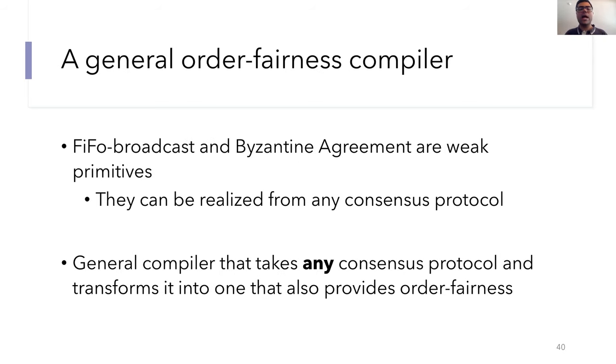A very cool byproduct of our protocol is that it serves as a fair ordering compiler. Our protocols use FIFO broadcast and agreement primitives, which are sort of weak primitives in the sense that they can be realized from any consensus protocol. So this results in a sort of interesting observation. Our Aequitas technique provides a general compiler that can take any standard consensus protocol and transform it in a black box way into one that also provides order fairness.